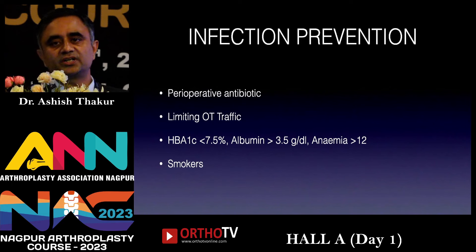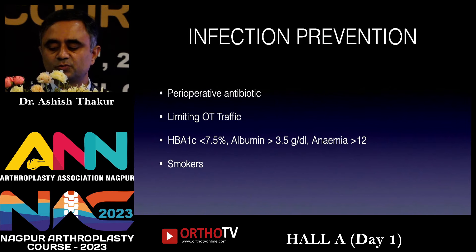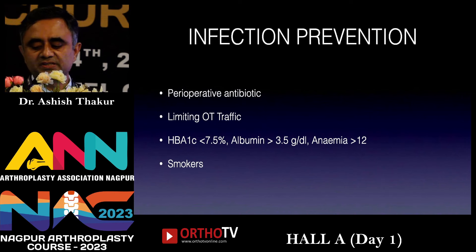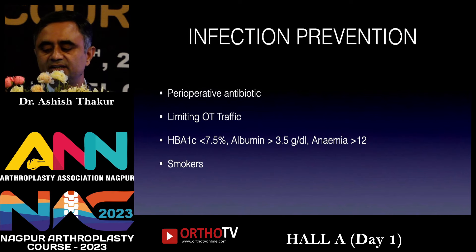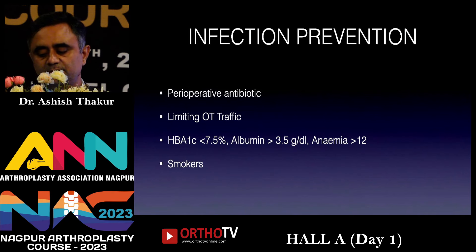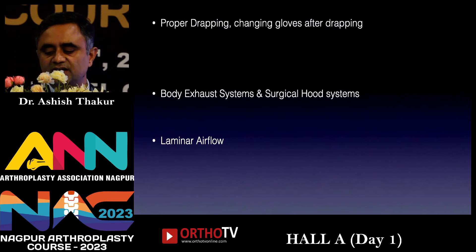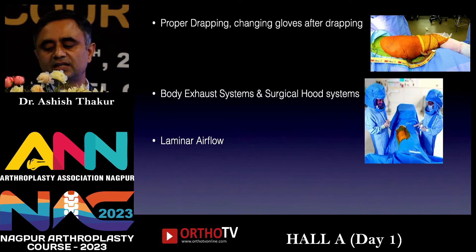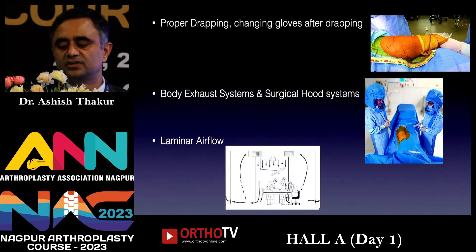One of the most dreadful complications in any joint replacement surgery is infection. This is mostly a multifactorial event, and the incidence rises due to missing perioperative antibiotics, non-regulated OT traffic, and not maintaining important parameters like HbA1c, albumin, and anemia levels. Smokers obviously have a high risk of infection. Proper draping and changing gloves after draping is important. Body exhaust systems, surgical hood systems, and laminar flows all help in reducing the risk of infection.